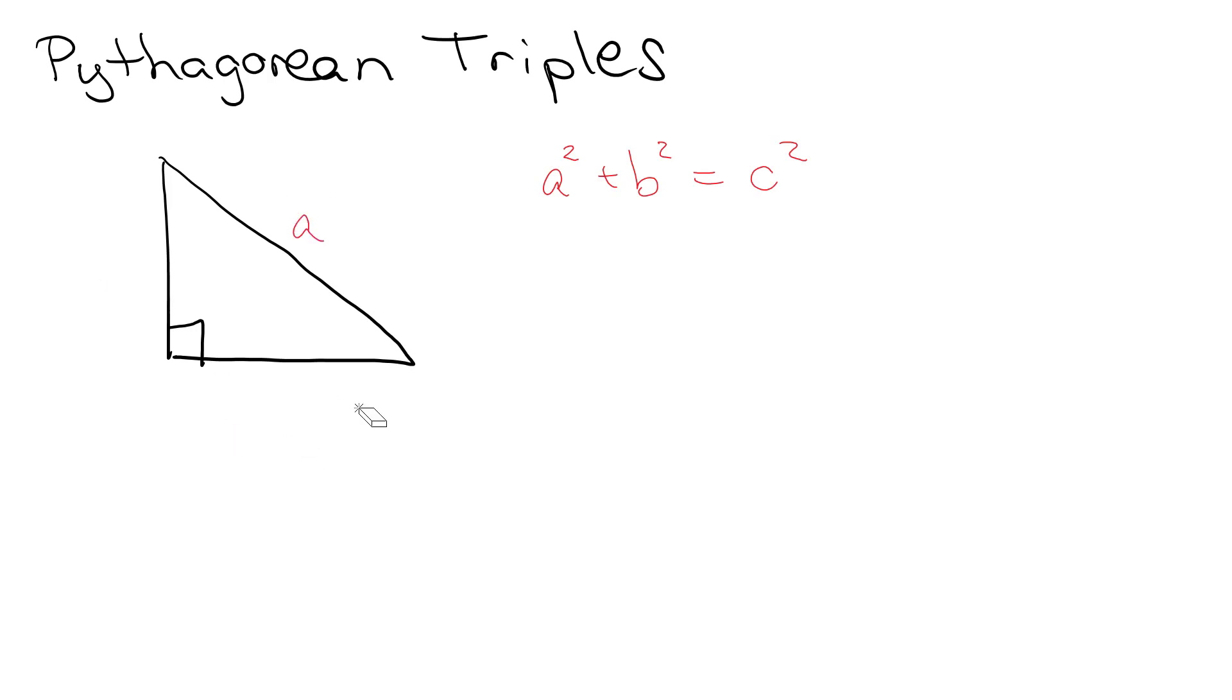I can put an a on a side or I can put a on this side, a or b, but the c always has to be the hypotenuse, which is the longest side of the triangle.